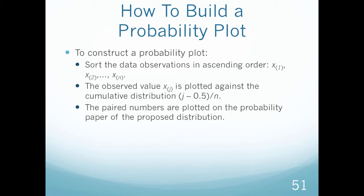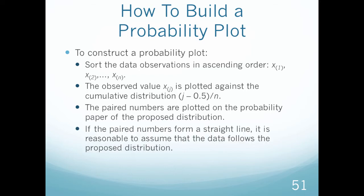So the paired numbers then, so my x and my new cumulative distribution which would be my y, are plotted on the probability paper or plot of the proposed distribution. So if they form a straight line, then it's reasonable to assume that the data follows the proposed distribution.